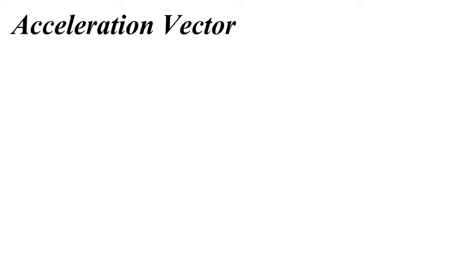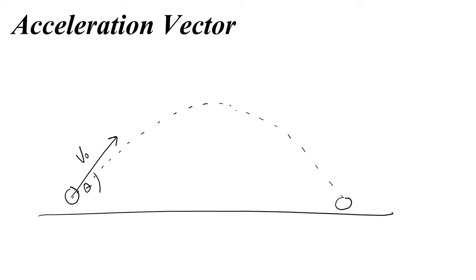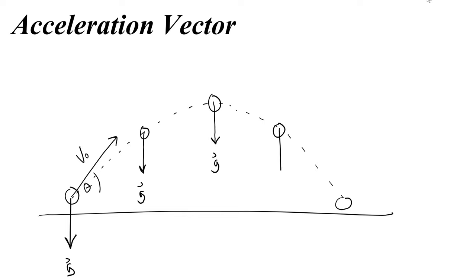Let's take some notes to summarize all of this, starting with the acceleration vector for a projectile going through its path. We draw a projectile with an initial velocity v₀ at some angle theta, and the trajectory looks like a parabola. Drawing the ball at the middle, at the top, and at the bottom — the acceleration vector always points down. We can call it g, because the acceleration due to gravity — little g — is the acceleration at every point, and it always points down.